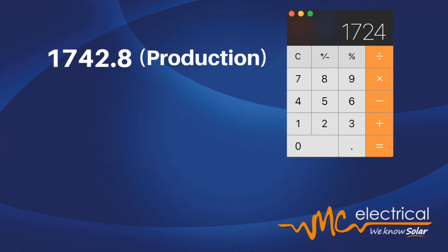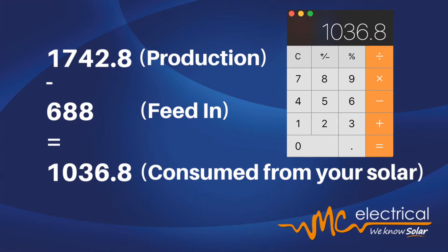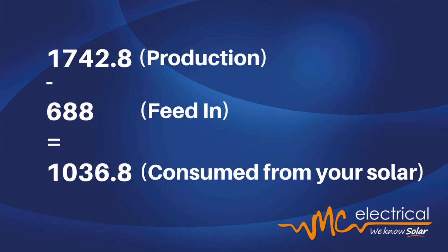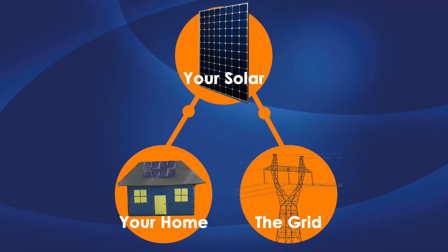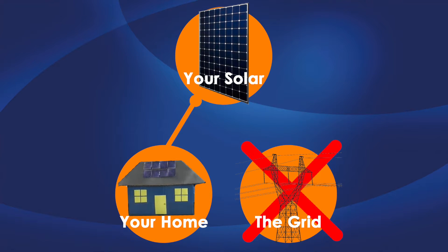If you subtract this 688 off our 1724.8 production you are left with 1036.8 kilowatt hours. This is the amount you have consumed directly from your solar.